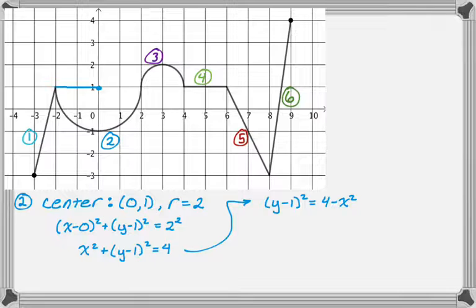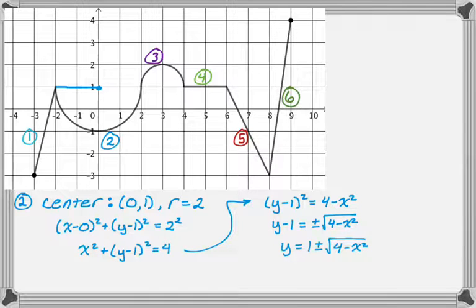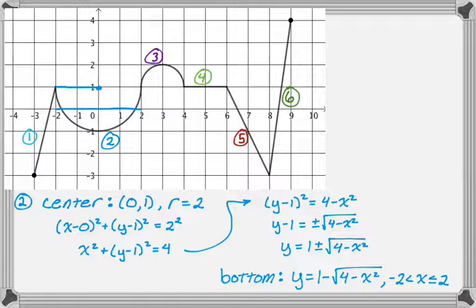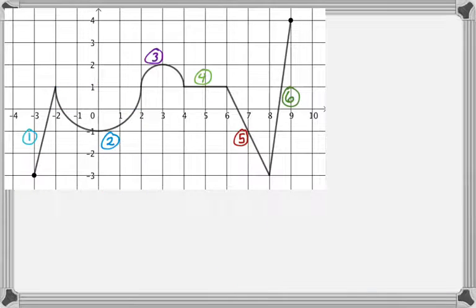Taking the square root of both sides — remember to include plus or minus — and then adding one to both sides to solve for y. I want the bottom half of the circle, so I take the negative: y equals one minus the square root of four minus x squared. This is valid from negative two to positive two. Negative two was already used for branch one, so I'll include positive two on this branch.